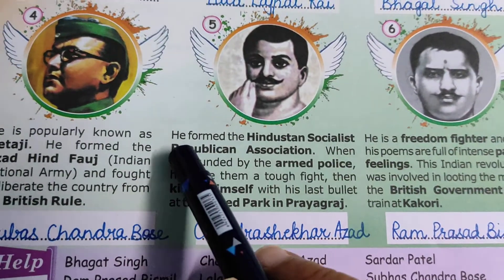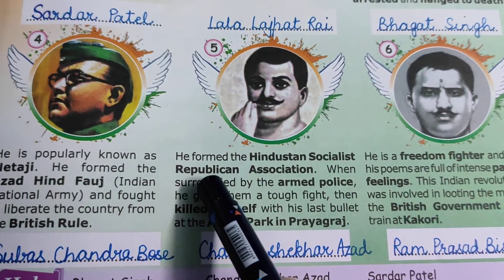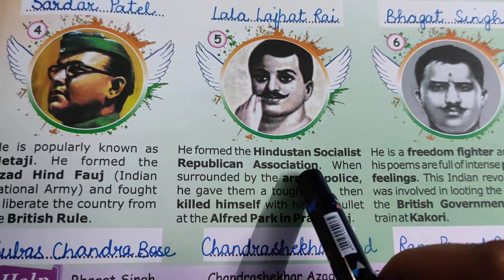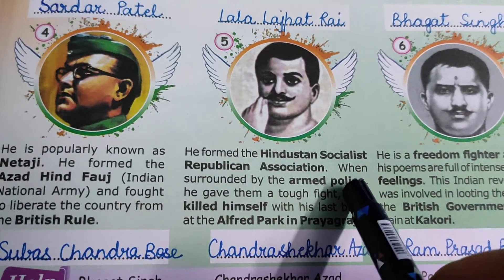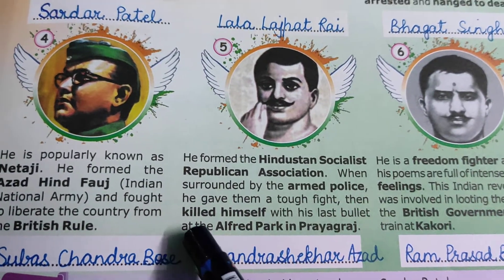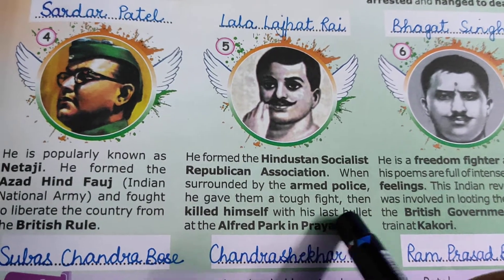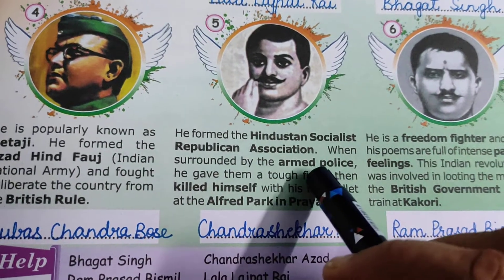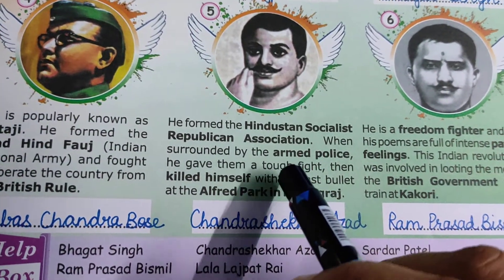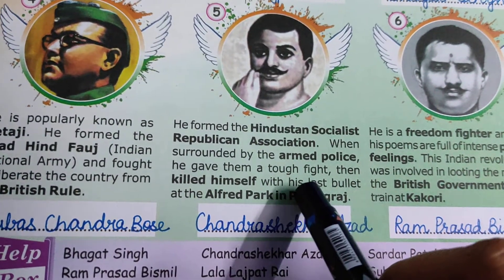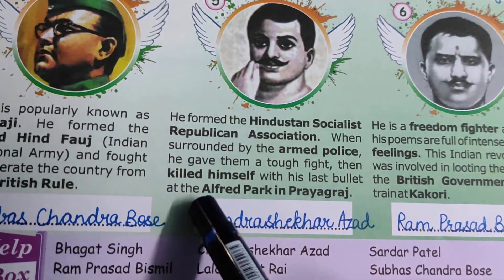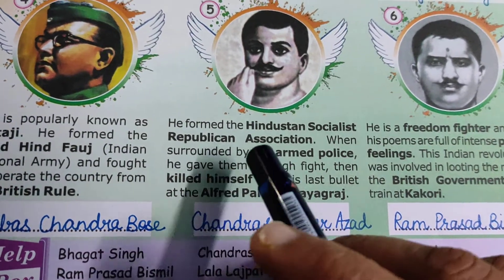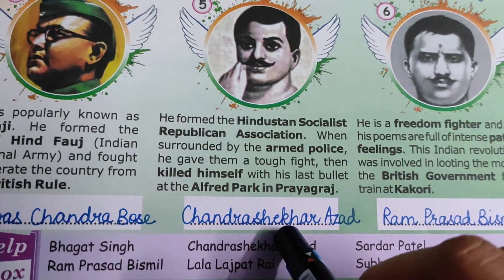Coming on to the next. He formed the Hindustan Socialist Republican Association. He was the founder of that organization. When surrounded by the armed police, he gave them a tough fight, then killed himself with his last bullet at the Alfred Park in Prayagraj. He was surrounded by the British police and fought hard. When he had only his last bullet left, he shot it at himself because he did not want to be caught. This great freedom fighter is known as Chandrashekhar Azad.